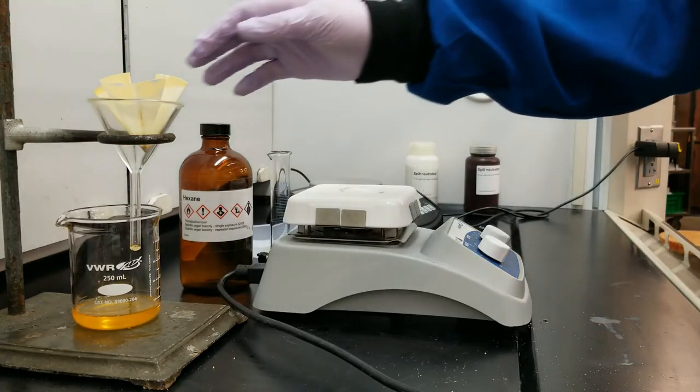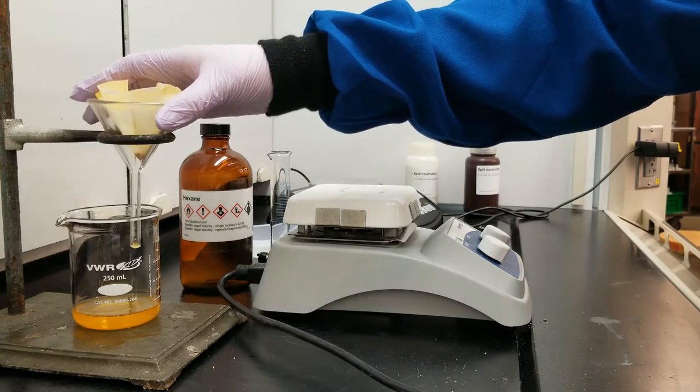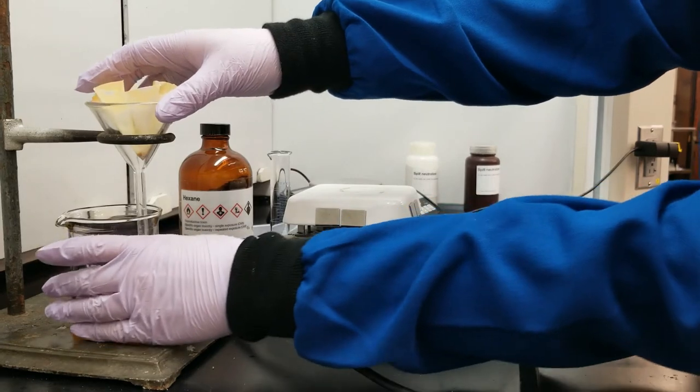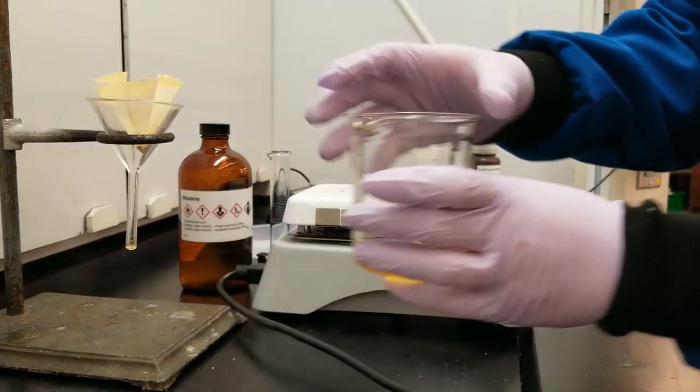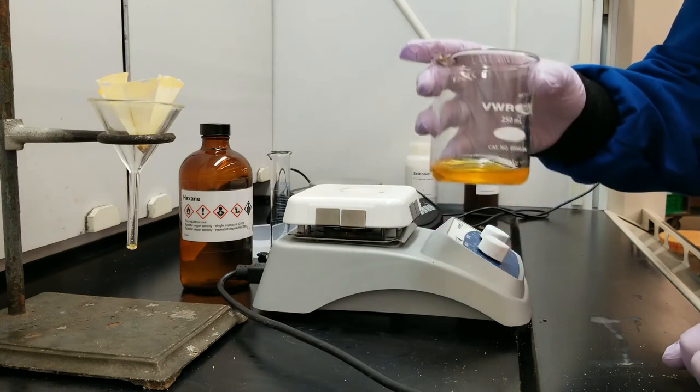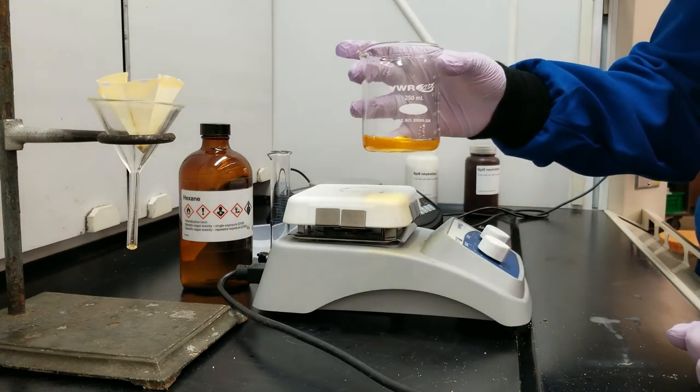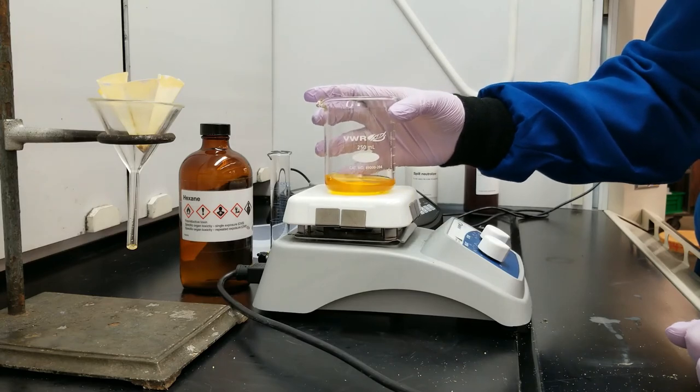So it looks like my fats and hexane are done filtering. So I'm done with my filter apparatus. The next thing I'm going to do is take my beaker with my fats and hexane and I'm going to gently heat off the hexane, which will take a little while but not very, very long because hexane is very volatile.